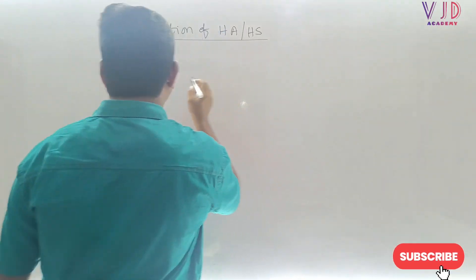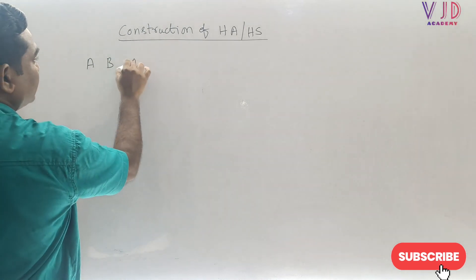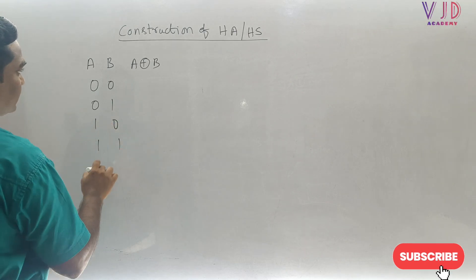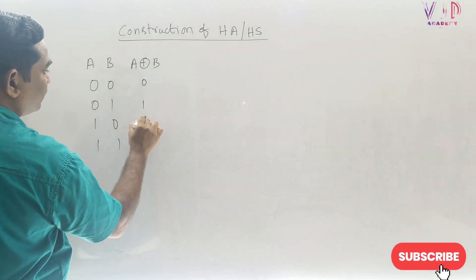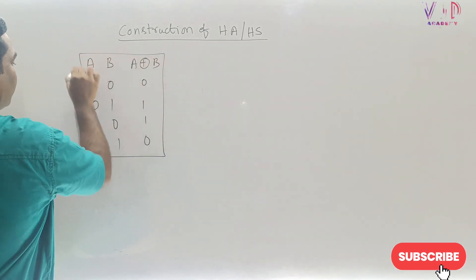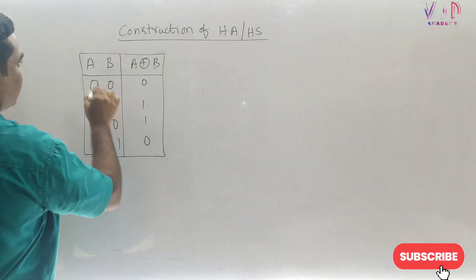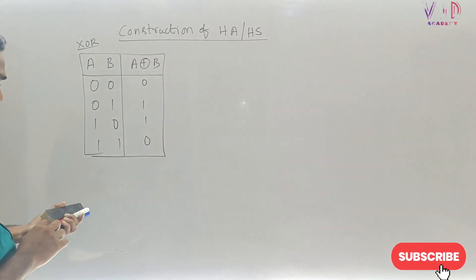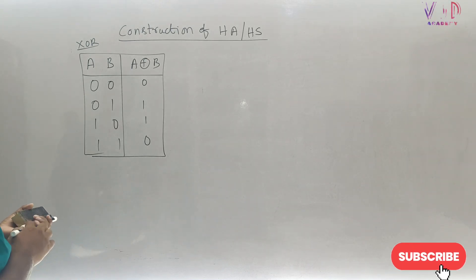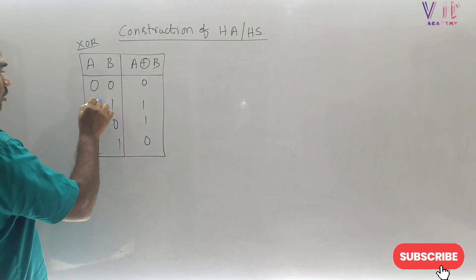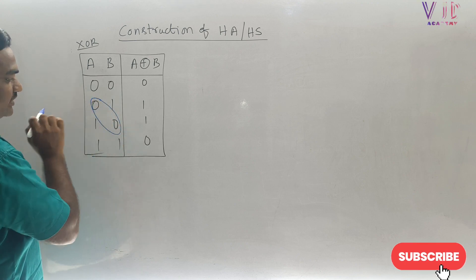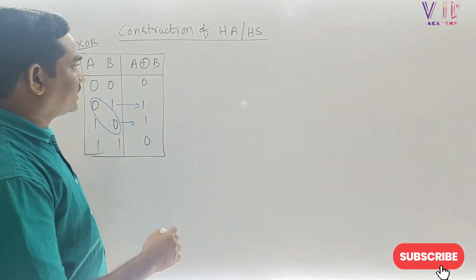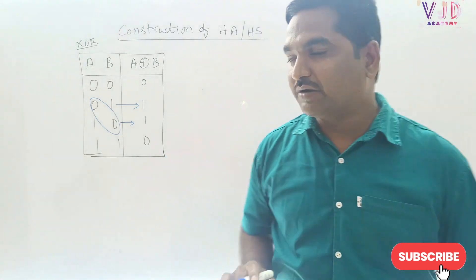We know that for an XOR gate with inputs A and B, the output A XOR B is: 0 XOR 0 = 0, 0 XOR 1 = 1, 1 XOR 0 = 1, 1 XOR 1 = 0. This is the truth table of the XOR gate. The key logic here is: whenever one of the inputs is zero, then automatically the output is zero.